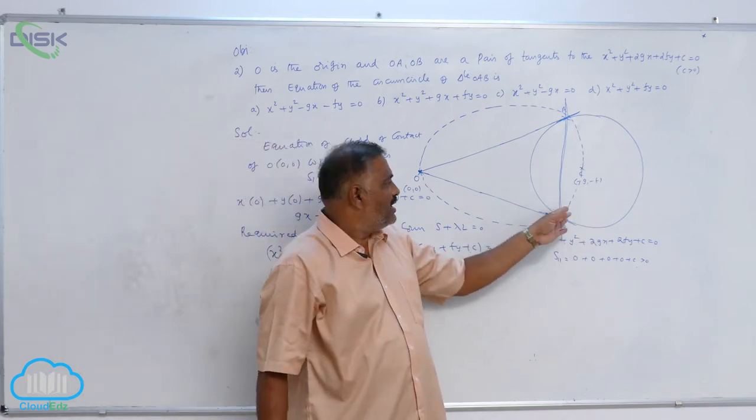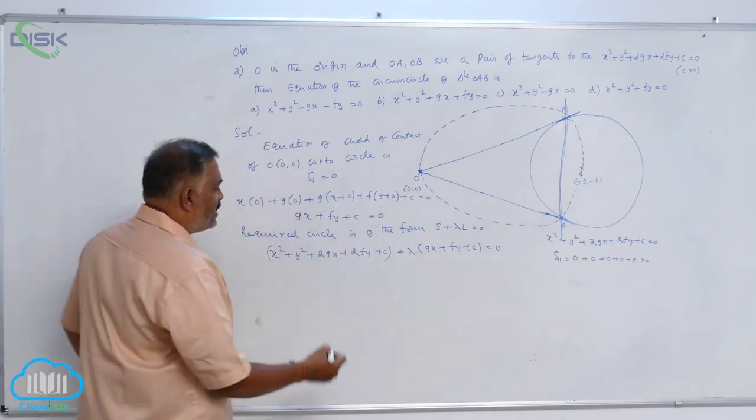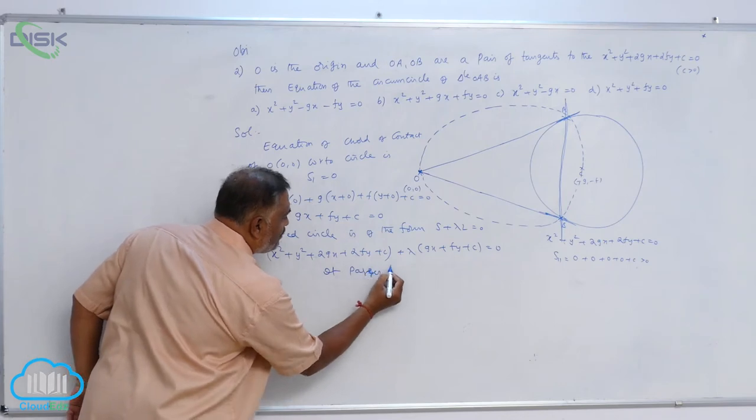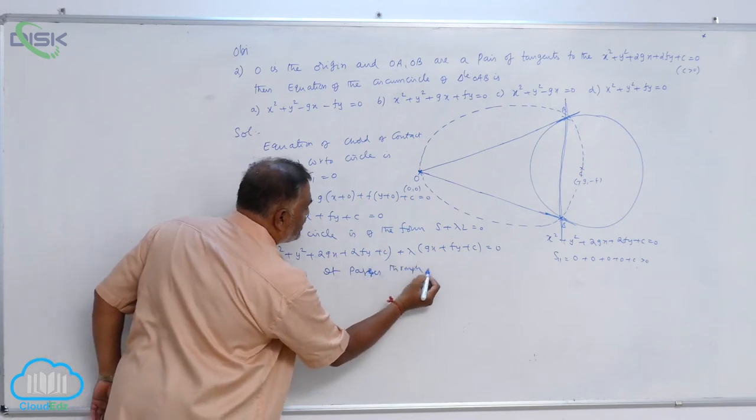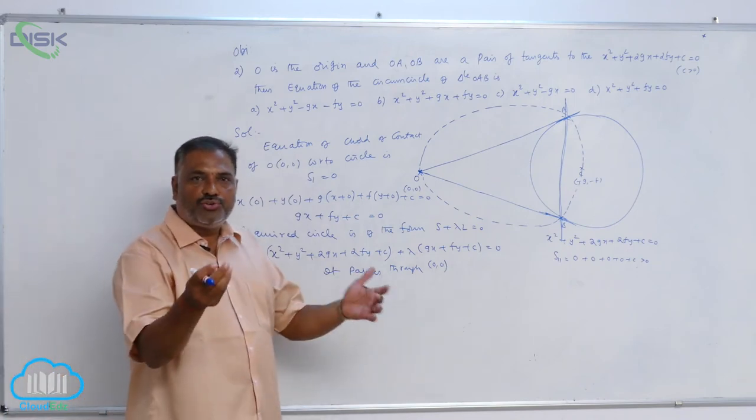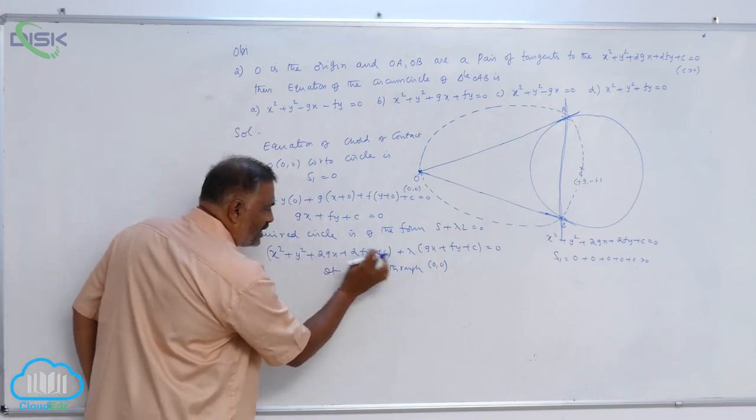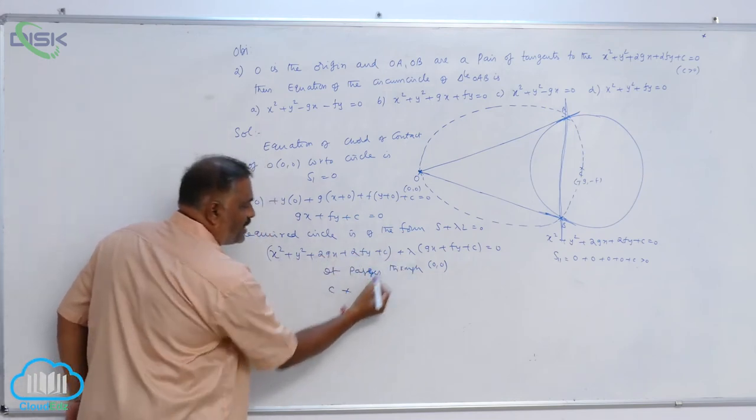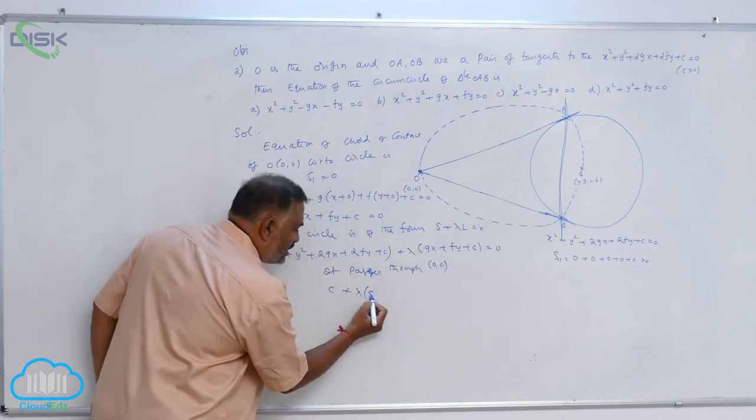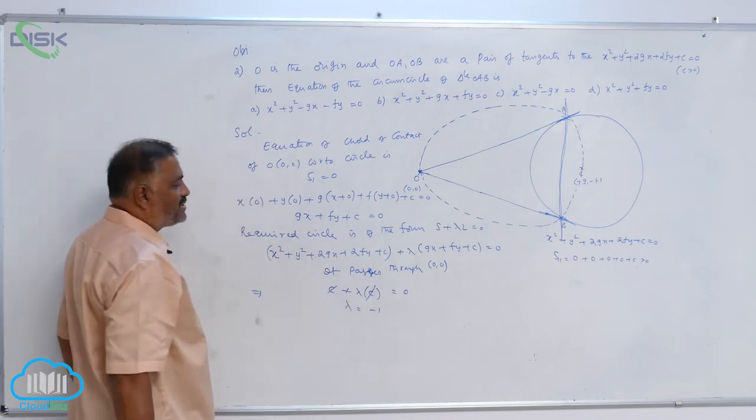And obviously, we see that this circle passes through what point now? 0, 0. So, it passes through 0, 0 implies wherever X and Y are there, substitute 0, 0. So, C plus lambda times C is equal to 0. C gets cancelled. Lambda is equal to minus 1.